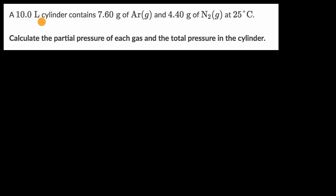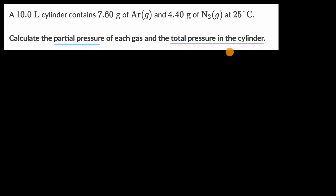We're told that a 10 liter cylinder contains 7.60 grams of argon in gas form and 4.40 grams of molecular nitrogen, in gas form, at 25 degrees Celsius. Calculate the partial pressure of each gas and the total pressure in the cylinder.